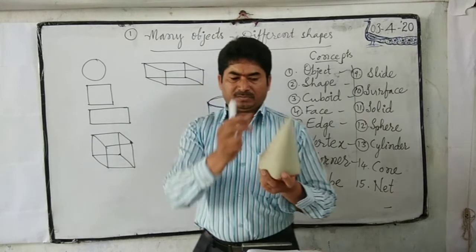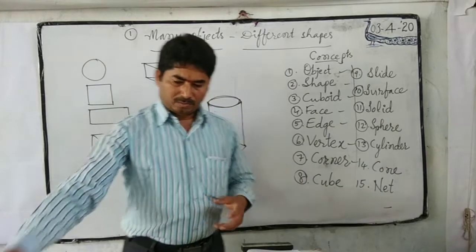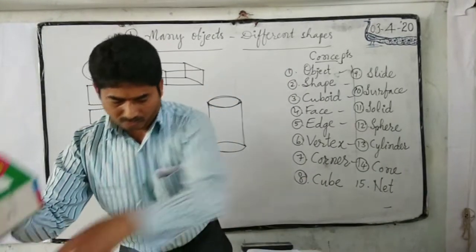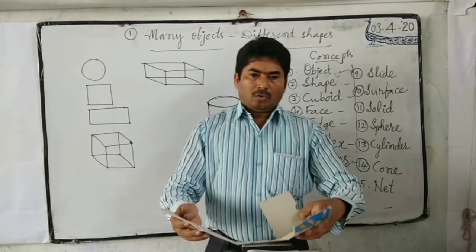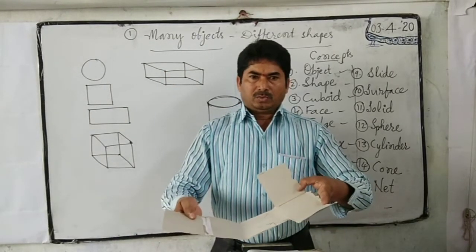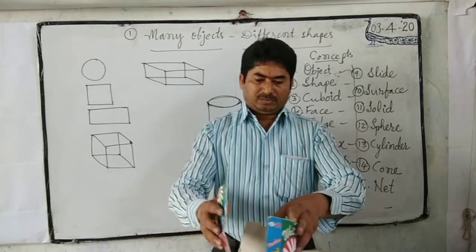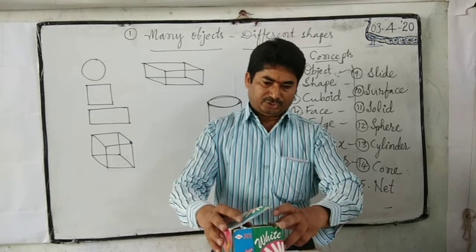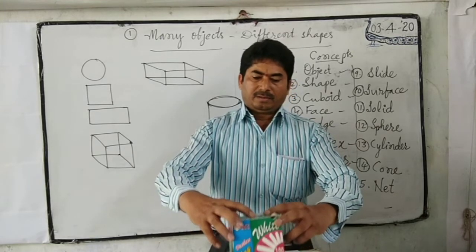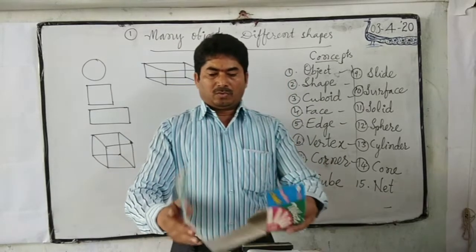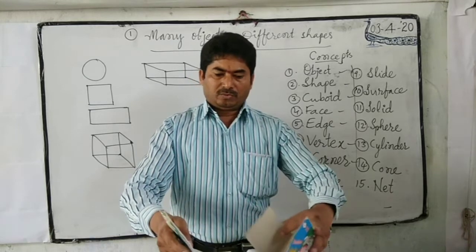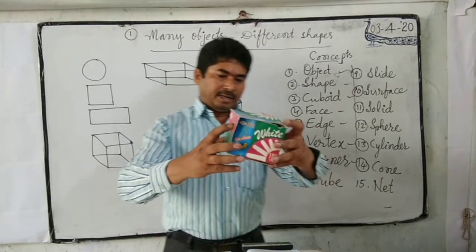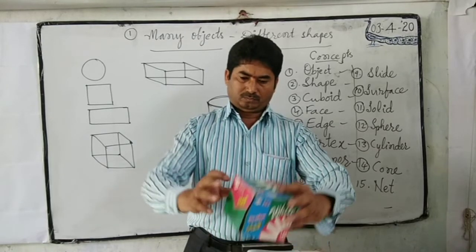Next, net. What is a net? The open faces used to make a box or object — that unfolded shape — is called a net.